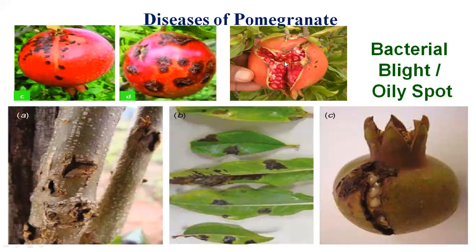This is a major factor in recent years in pomegranate cultivation, causing heavy losses — sometimes up to 100 percent — due to oily spot. The primary source of infection is infected cuttings or infected planting material from Xanthomonas. The secondary source of infection is wind and rain splashes, by which the bacterium spreads. These two factors are responsible for the secondary spread of bacterial blight, also known as oily spot — a very important disease for your examination.